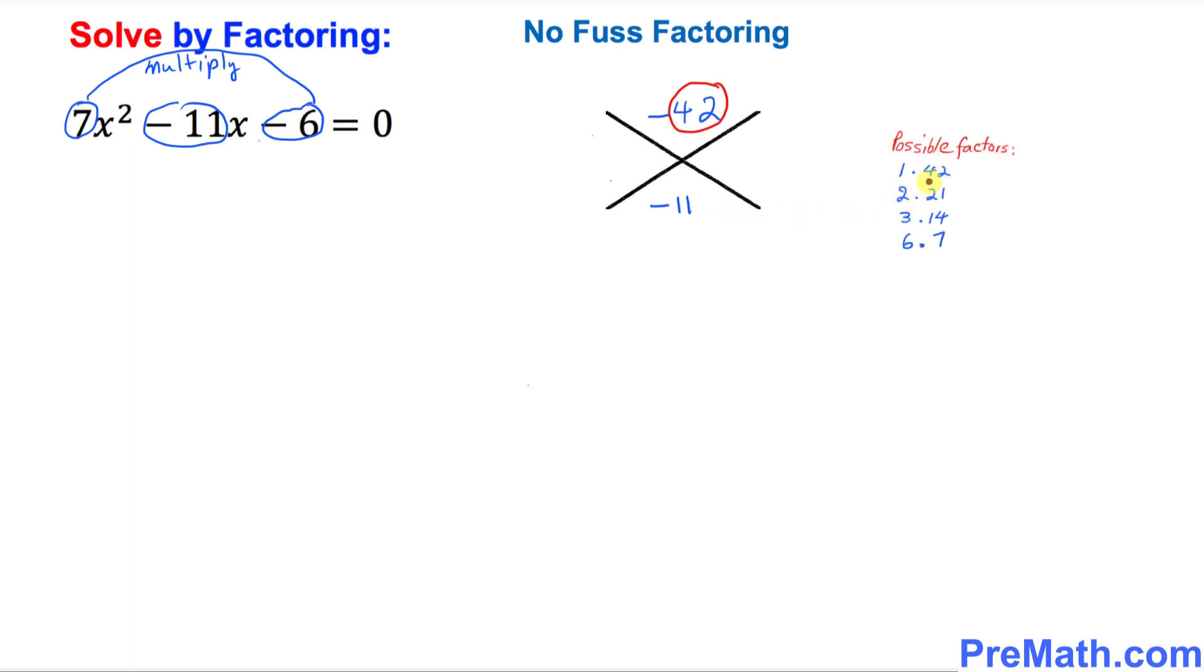And here I have listed all possible factors of this 42. So the only number, if you can look at these, the possible combination that is going to work for us, the option is going to be 3 and 14. 3 and 14 is going to give us 11. So I want you to just put down 3 right up here and 14 right up here.